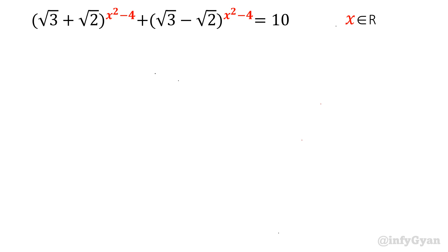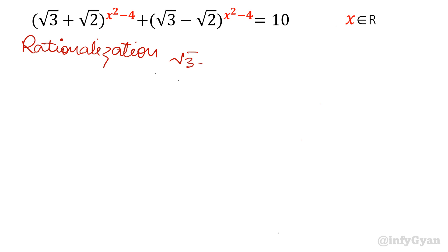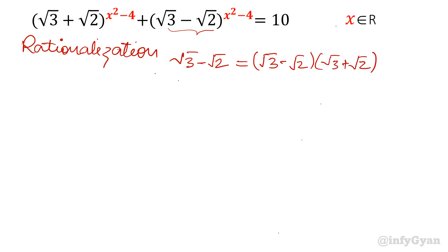I will start with rationalization first. This is an irrational number, so I will multiply by its conjugate. I am taking (√3 - √2) as the second term bracket. That will be √3 - √2, and its conjugate will be (√3 + √2) over (√3 + √2).